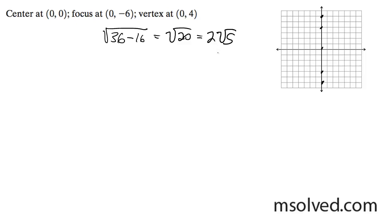That will come in handy when we graph it, which is 4.47, roughly 4.5. 1, 2, 3, 4, 5. 1, 2, 3, 4, 5.